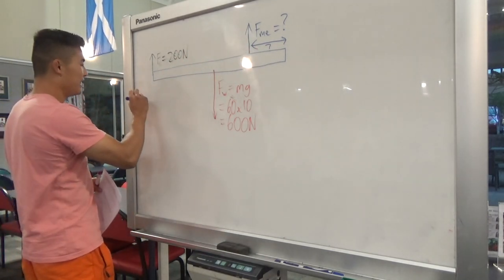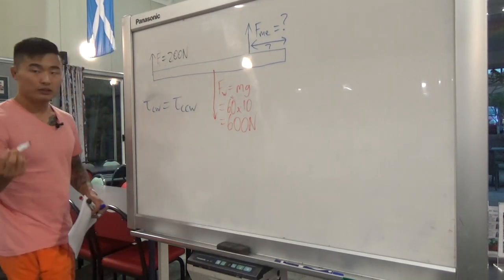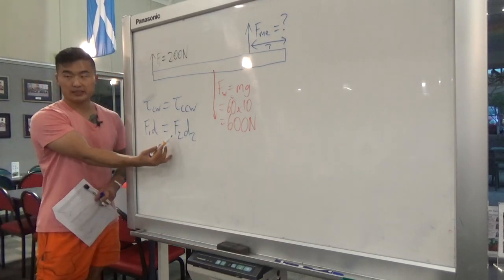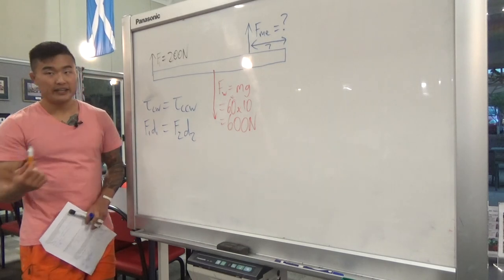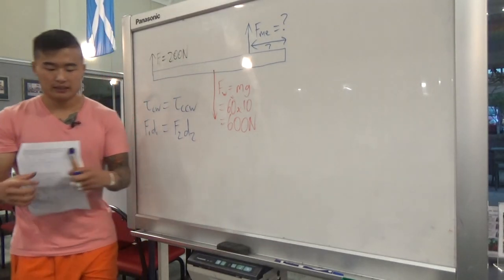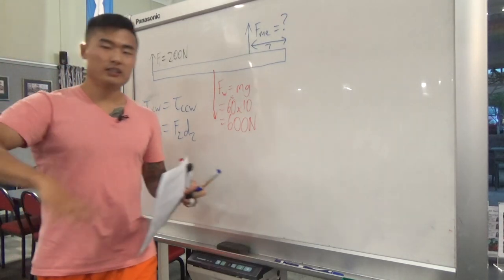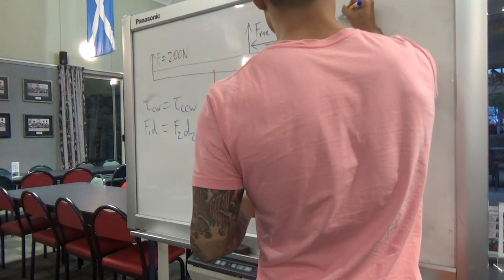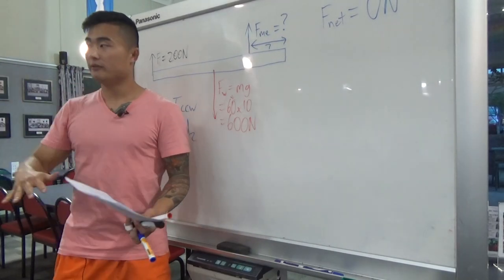Since the plank is stationary, it's not accelerating — so the vertical net force must be zero. The upward and downward forces cancel out. We have 600 newtons downward and 200 newtons upward from the friend. To cancel, we need an additional 400 newtons upward — that's the force I'm exerting. In the torque equation, if we have three known variables we can find the fourth.